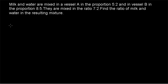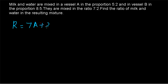Now let's see one more example. Milk and water are mixed in vessel A in the proportion 5:2 and in vessel B in the proportion 8:5. They are mixed in the ratio 7:2 — find the ratio of milk and water in the resulting mixture. It's the same kind of question: two mixtures of milk and water A and B with given proportions, mixed in the ratio 7:2, so R equals 7A plus 2B.